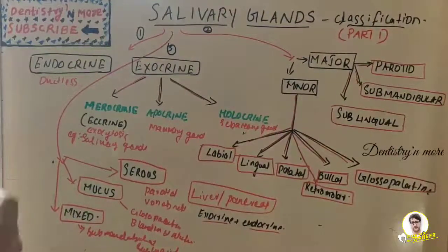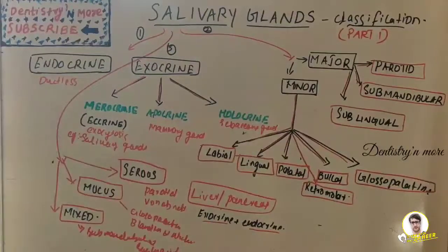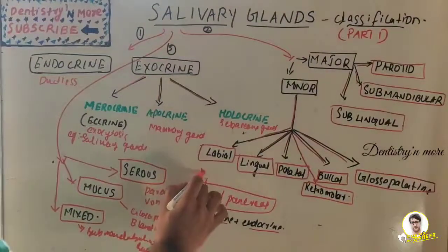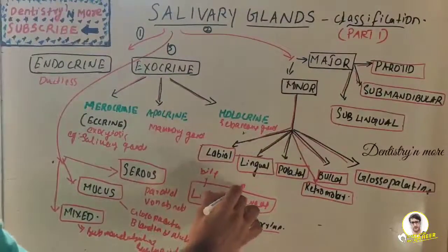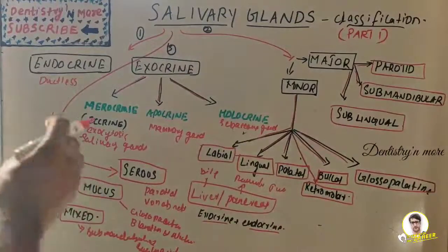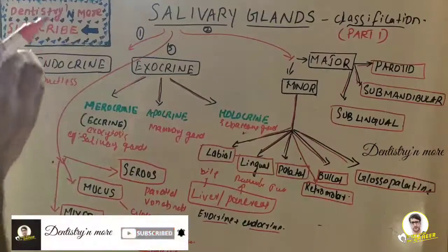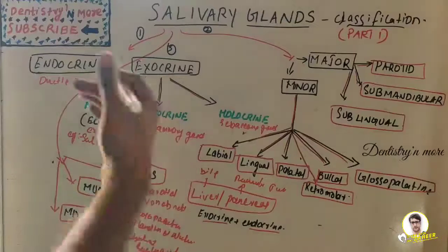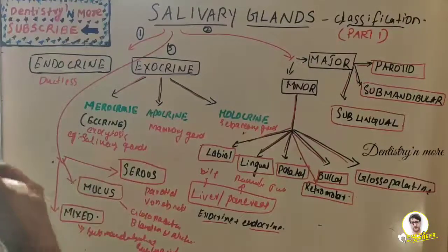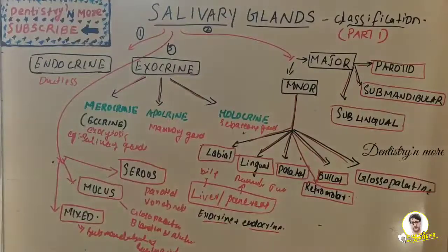Liver and pancreas are considered both exocrine and endocrine glands. They are exocrine because they secrete products — bile from the liver and pancreatic juice from the pancreas — into the gastrointestinal tract through a series of ducts. They are also endocrine glands because they secrete other substances directly into the bloodstream without any ducts. So liver and pancreas are considered both exocrine and endocrine glands.